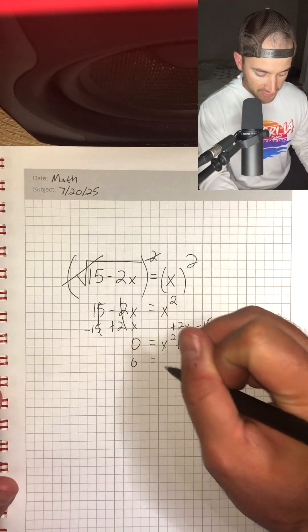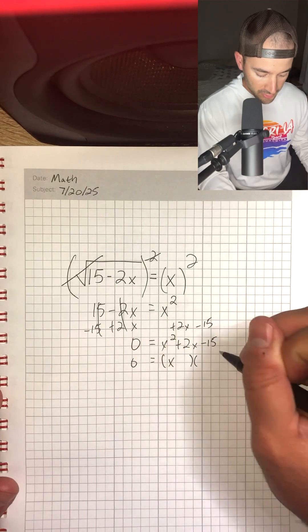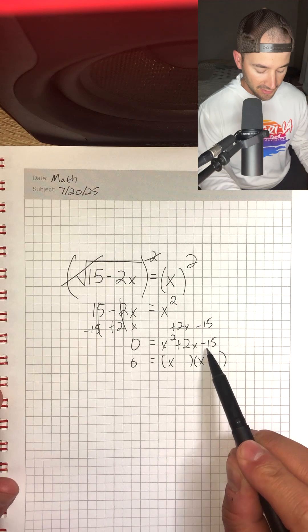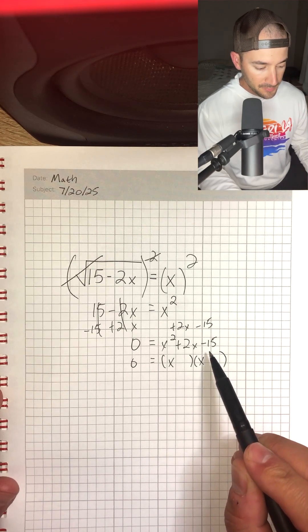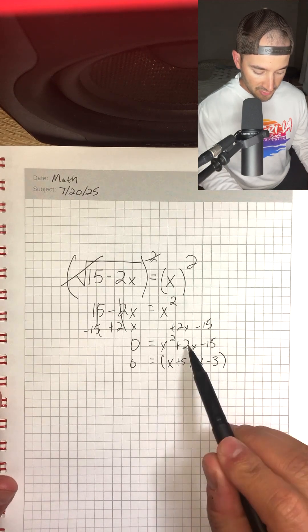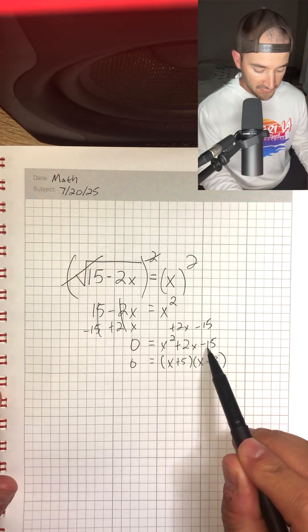So now we can just factor this and we need to find two numbers that add to positive 2 and multiply to negative 15. That would be positive 5 and negative 3 because they add to 2 and multiply to negative 15.